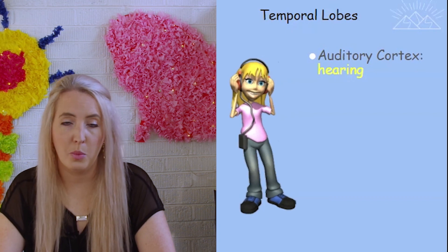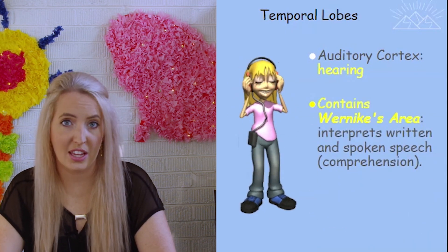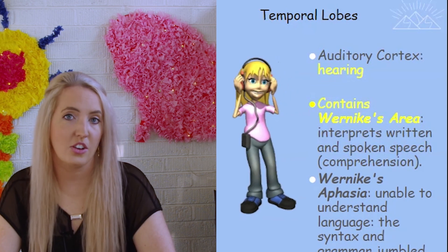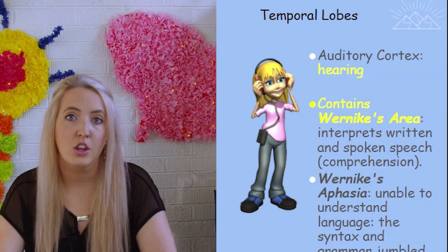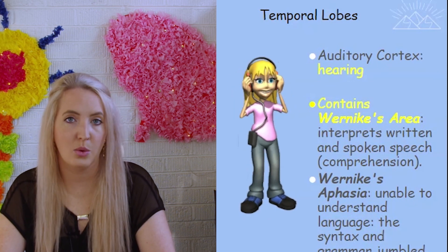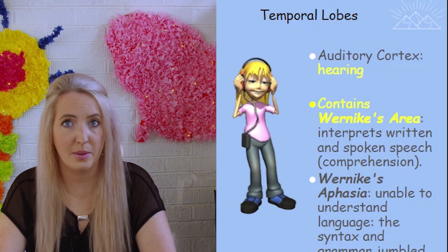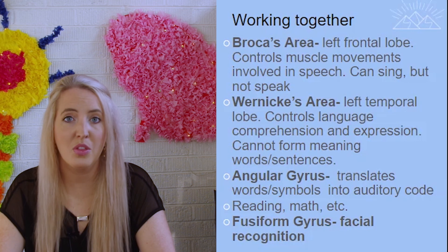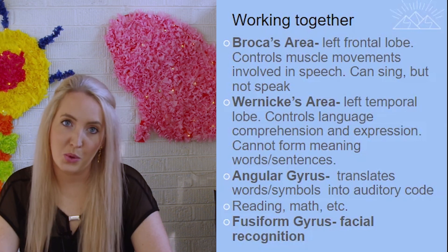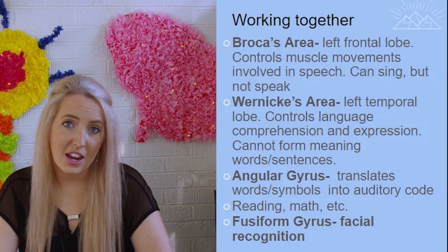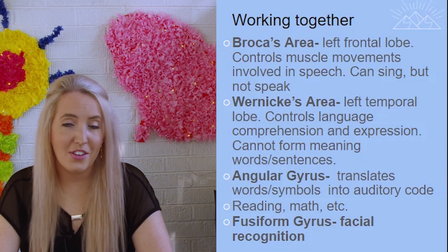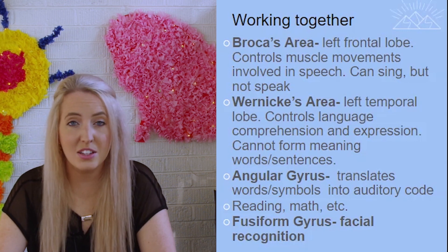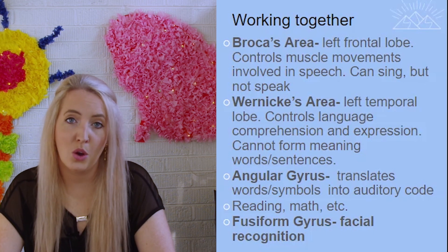There are two parts of the temporal lobe we need to know: the auditory cortex and Wernicke's area. Wernicke's area is responsible for language comprehension — it's why you can understand the things you're hearing. As you listen to this video, you hear my voice, but Wernicke's area helps you understand the words I'm saying. Many different brain parts work together; when you read something, it goes from your thalamus to your occipital lobe, and if you read it out loud, Broca's area is involved, while Wernicke's area helps you understand it. Additional association areas include the fusiform gyrus, which helps us recognize faces, and the angular gyrus, which turns words or numbers into a code the brain can understand.